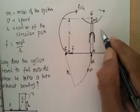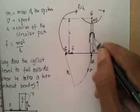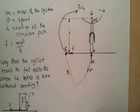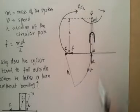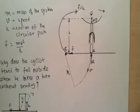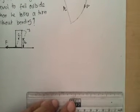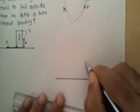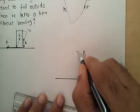I hope this has helped you understand why the cyclist tends to fall outwards when trying to take a turn without bending inwards. Now let us look at why the cyclist bends inwards, and what happens exactly when the cyclist bends inwards. Let us draw the same diagram again — the road, and now the cyclist is bending inwards, so the bicycle is inclined, bending at an angle theta.